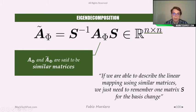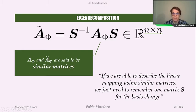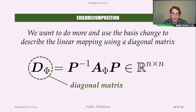Given A, we just need to remember S and we can easily compute Ã. Also, for S to yield similar matrices, A and Ã must be square matrices — their dimension is N×N. So we want to go further and use the basis change to describe the linear mapping using a diagonal matrix.